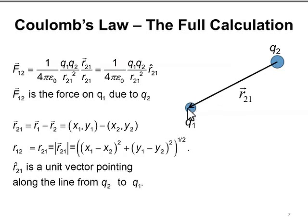If the two charges are positive, then that vector from two to one points away from charge two. And as a result, we have a repulsive force. If the two charges are of opposite sign, then the product q one, q two is negative, and the vector direction here points toward q two, with the result that we have an attractive force.